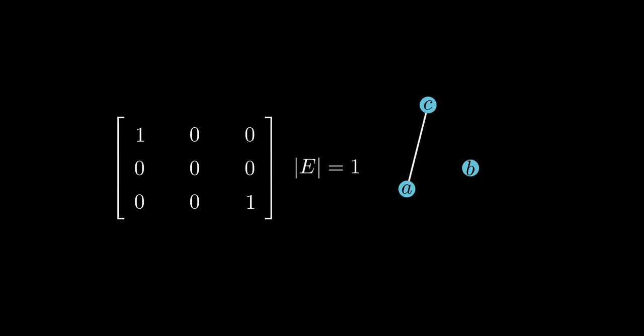If we're given the degree matrix of a graph, or we get it from the adjacency matrix of the graph, and we want to know the number of edges in the graph, we just sum the diagonal of the degree matrix, and then divide by two. In this case, the number of edges in this graph is one.